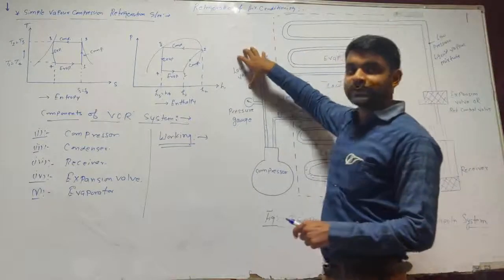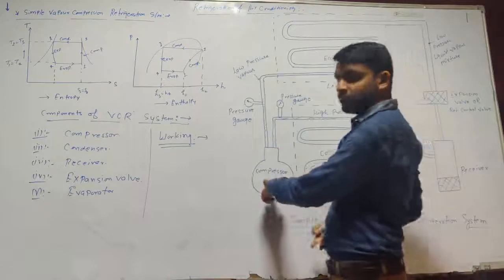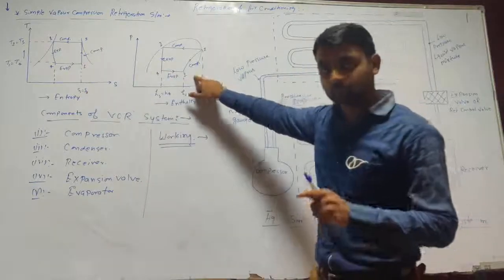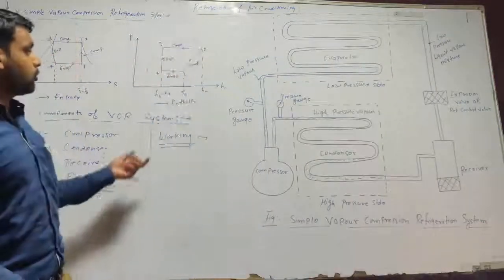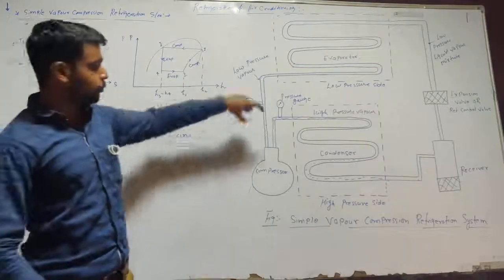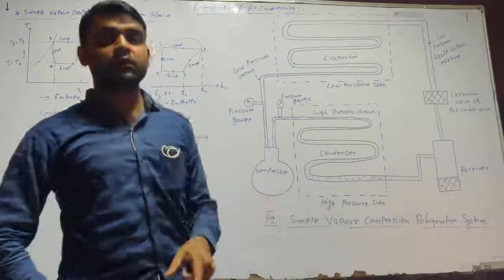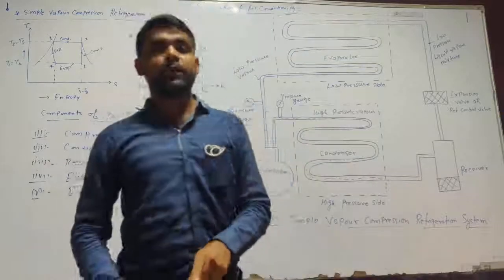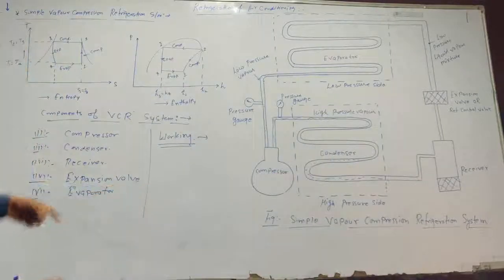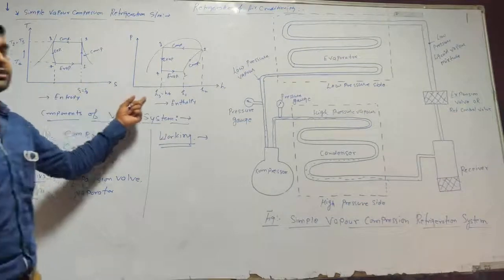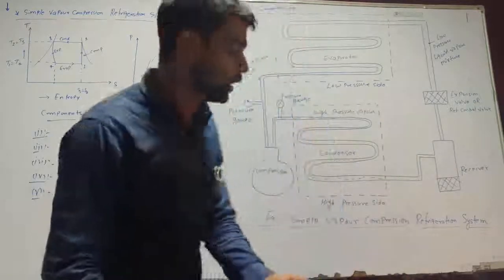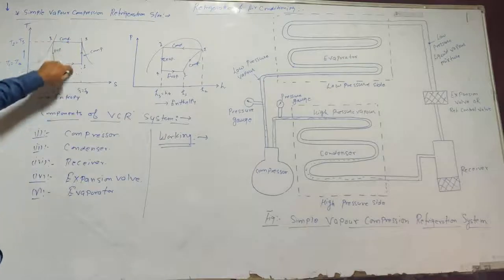The low pressure vapor refrigerant enters the compressor at point 1, coming from the evaporator. In the compressor, the low pressure, low temperature vapor refrigerant is compressed, and the pressure and temperature increase, as shown on the P-H diagram. The compression process, from point 1 to point 2, is an isentropic process, meaning entropy remains constant.